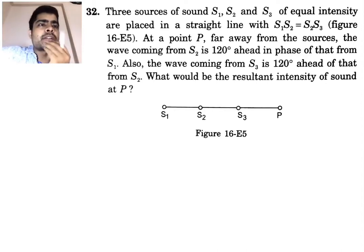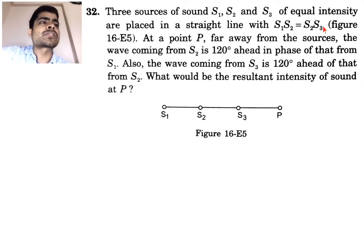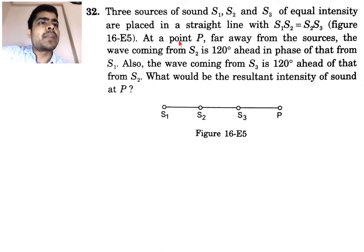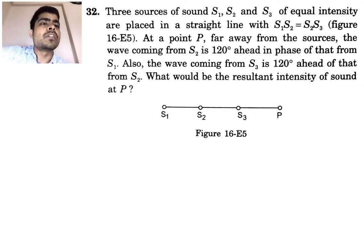We are looking at question number 32 from chapter 16, which is about sound waves. The question says: three sources of sound S1, S2, and S3 of equal intensity are placed in a straight line with S1S2 equal to S2S3. At a point P far away from the sources, the wave from S2 is 120 degrees ahead in phase from S1, and the wave from S3 is 120 degrees ahead of S2. What is the resultant intensity of sound at P?